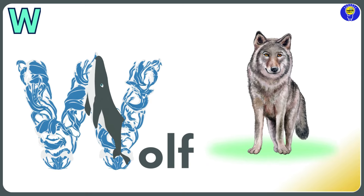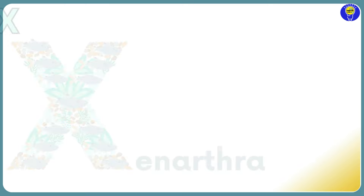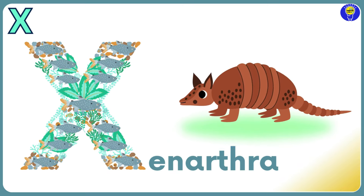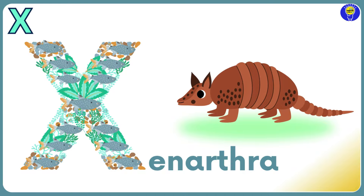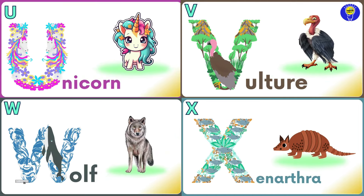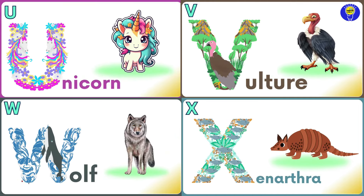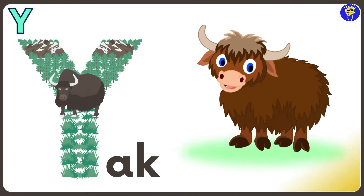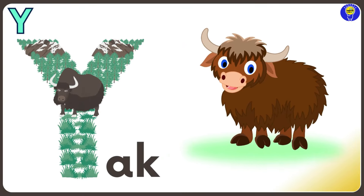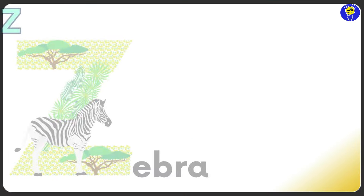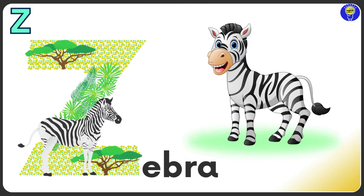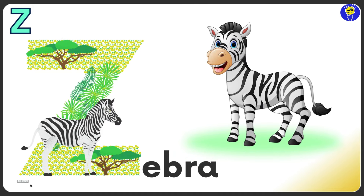W is for Wolf. W, W, Wolf. X is for Xenarthra. X, X, Xenarthra. Y is for Yak. Yak, Yak. Z is for Zebra. Z, Z, Zebra.